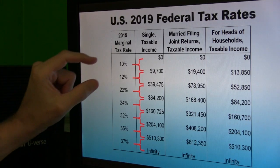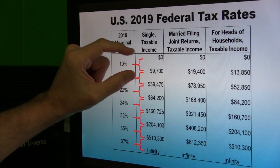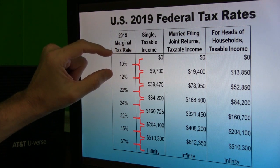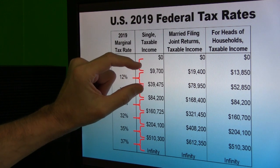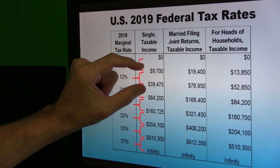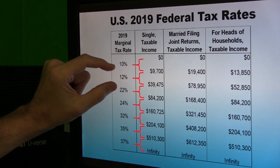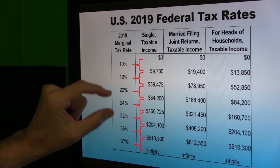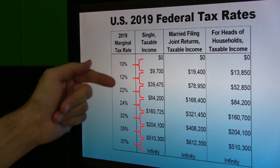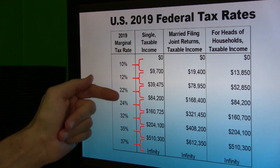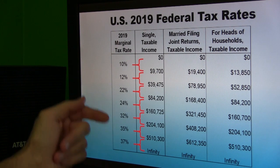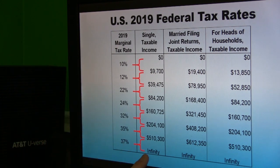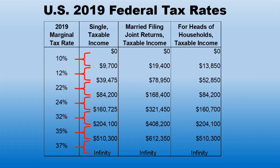As a single person, your first $9,700 is taxed at a 10% rate. Then any money between $9,700 and $39,475 is taxed at the 12% rate, and so forth. The marginal tax rate taxes you higher as you move into the next bracket — you're paying a higher rate on the margin as your income goes up, all the way to infinity. That's for the single person.